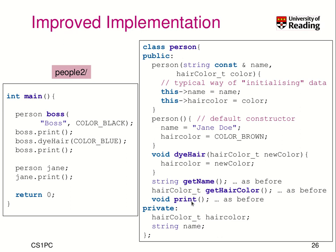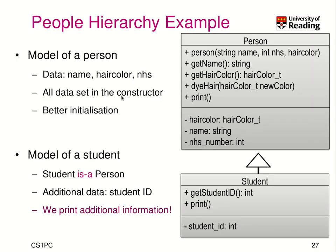Now we can create a hierarchy from this improved person model. We have a model of a student. A student is a person — it has all those data properties and operations. However, we want to extend the person by certain properties; in this case, we add the student ID. When the student is created, we need getStudentID, and we want to change print to also print the student ID. So we have a print method in person and a print method in student with the same name, but they print slightly different extended information.